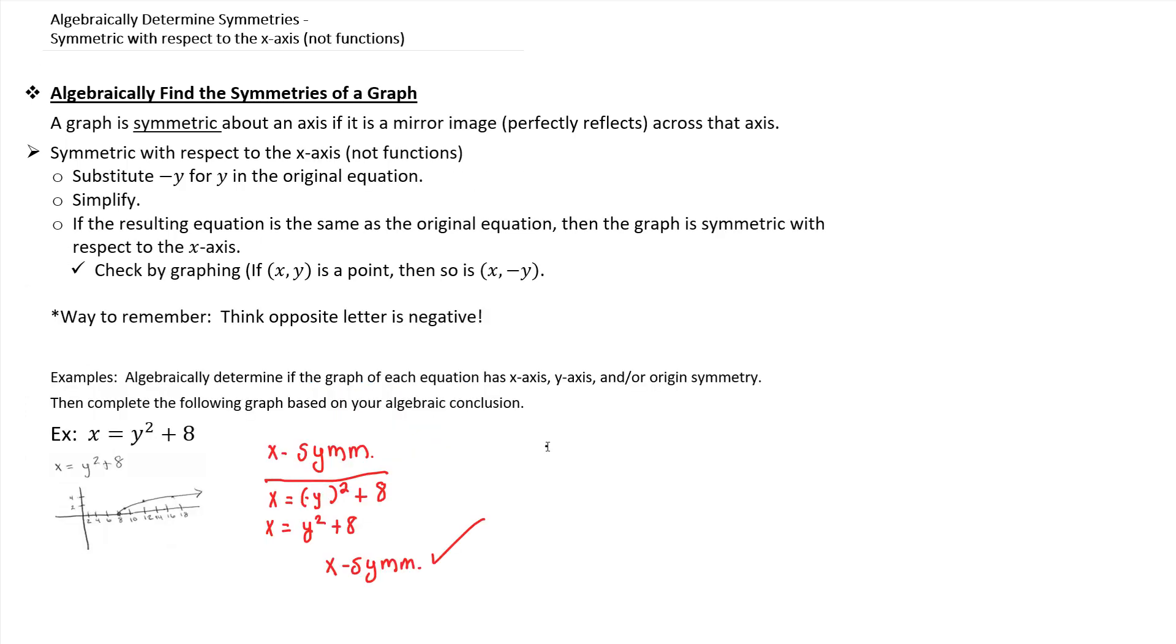So what that means from a graphical perspective, if this is half of the graph and you have x-symmetry, the other half of this graph reflects across the x-axis. Well, this is the x-axis. So a reflection across that would be this image. And so the full graph of x = y² + 8 is this entire image. So that's what happens graphically if you are x-symmetric.